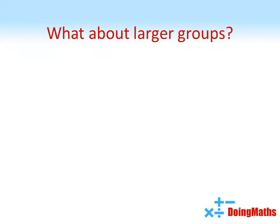What about larger groups? Suppose we have a group of n people. We're going to do this so we can create a formula for groups of any size. The first person shakes hands with everybody else apart from themselves. So the number of handshakes would be one less than the total number of people n, hence n minus 1.